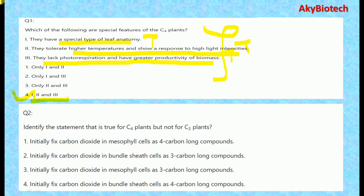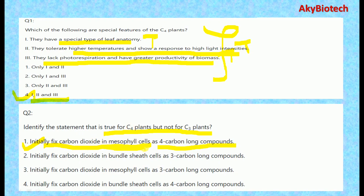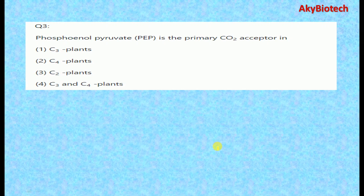Question two: identify the statement that is true for C4 plants but not for C3 plants. The correct answer is that C4 plants initially fix carbon dioxide in mesophyll cells as four-carbon-long compounds. As we know, C4 plants fix carbon dioxide in mesophyll cells as four-carbon-long compounds.